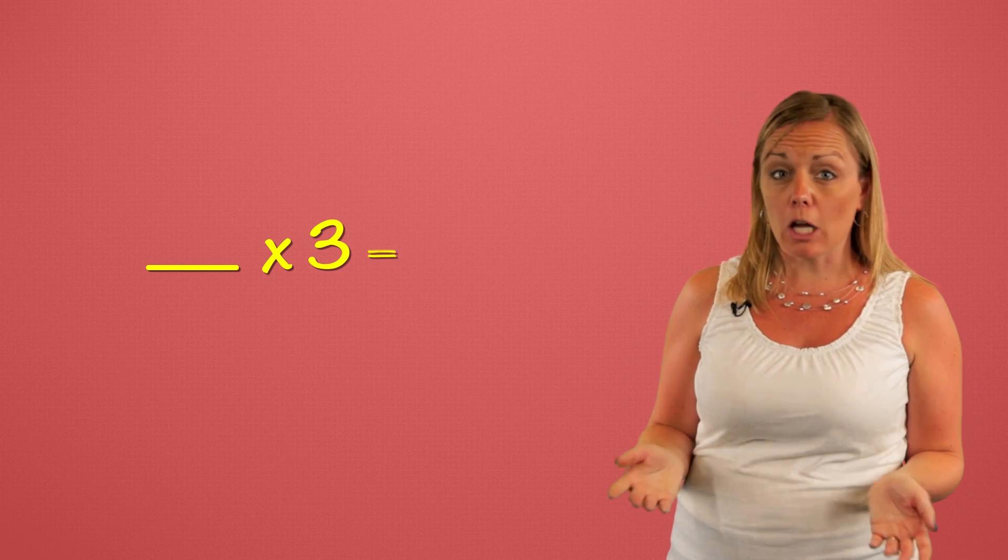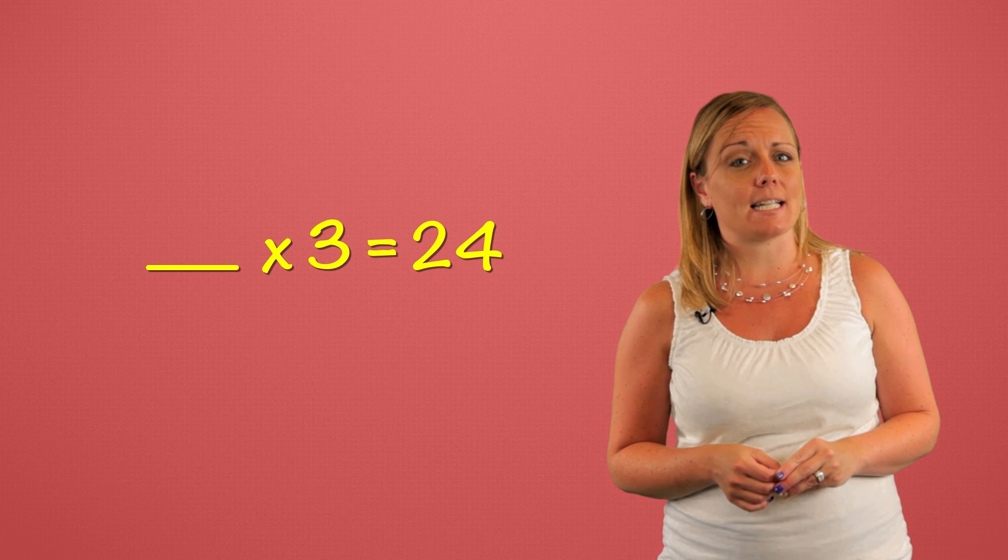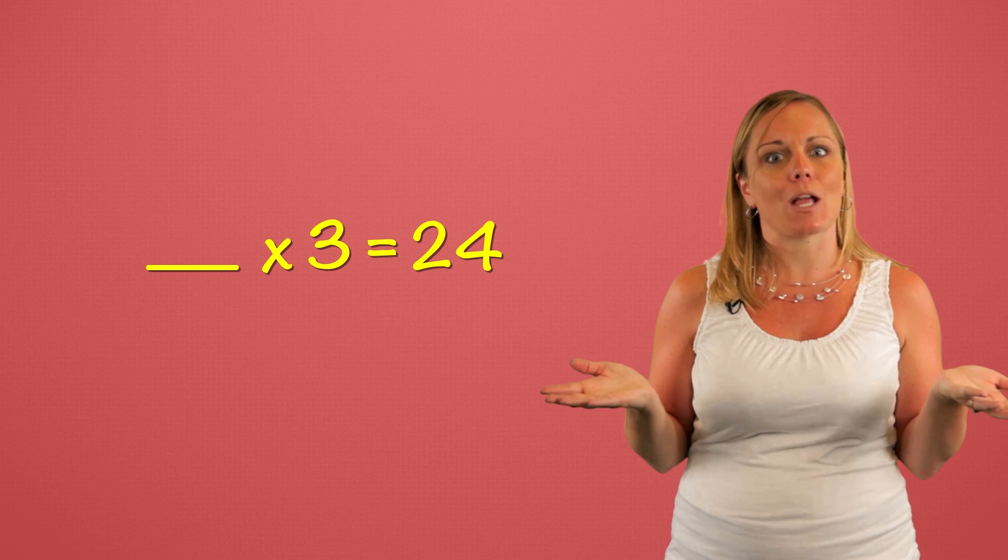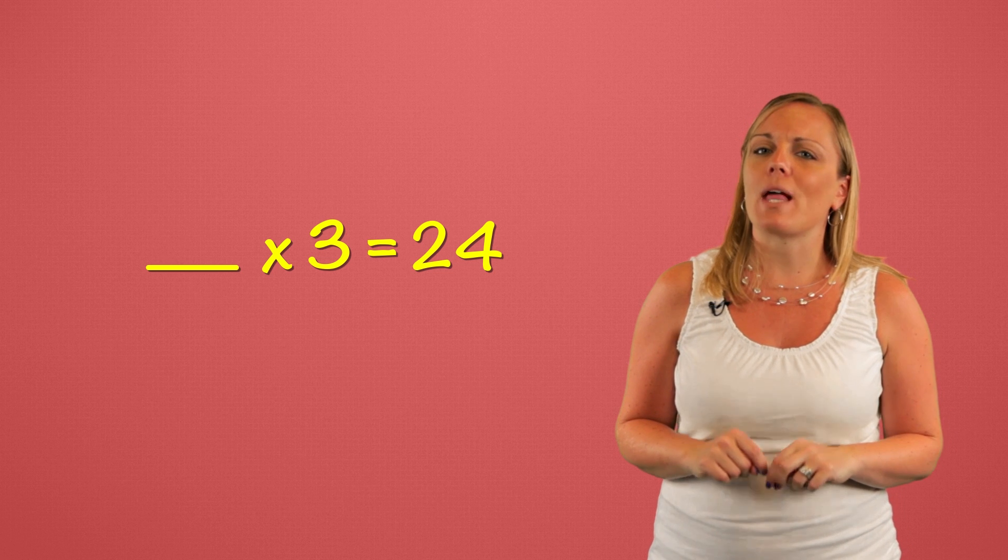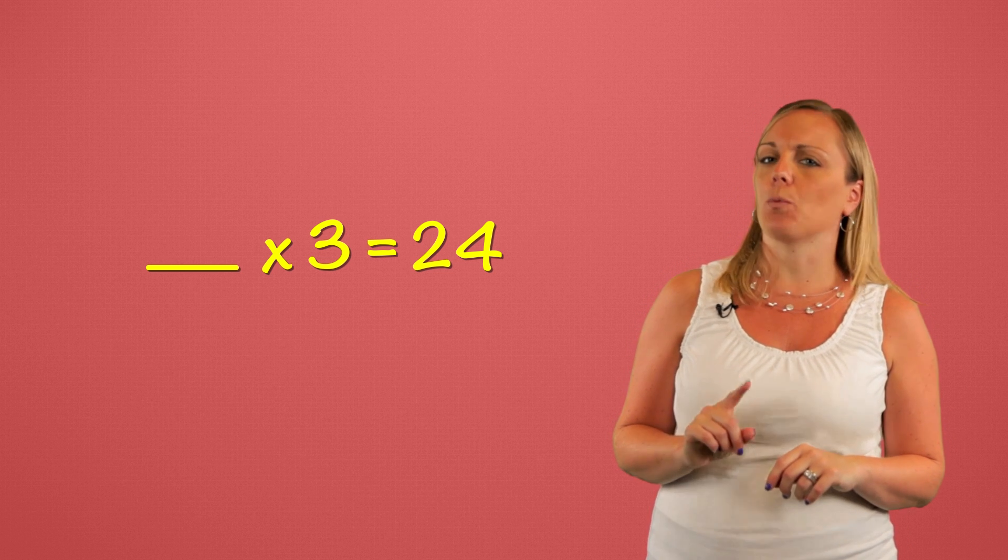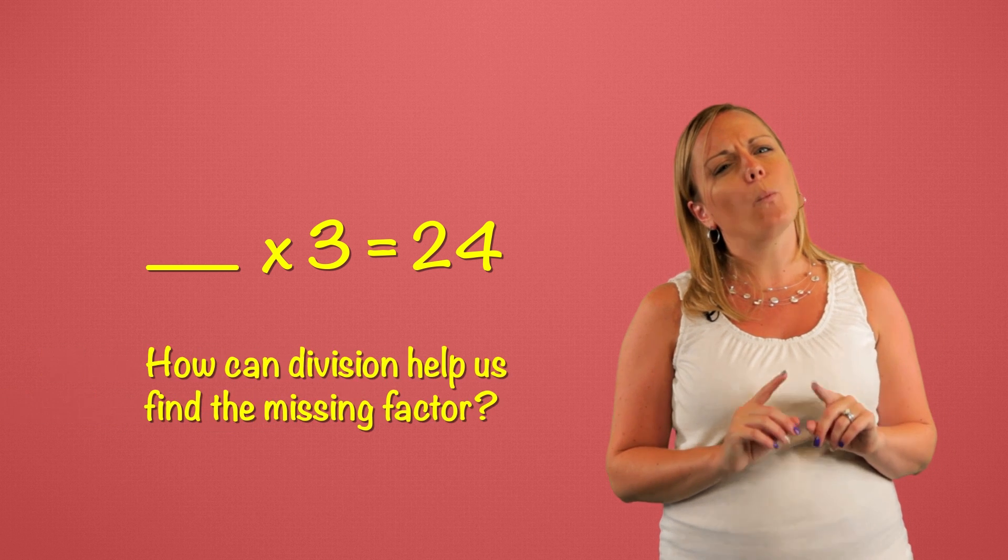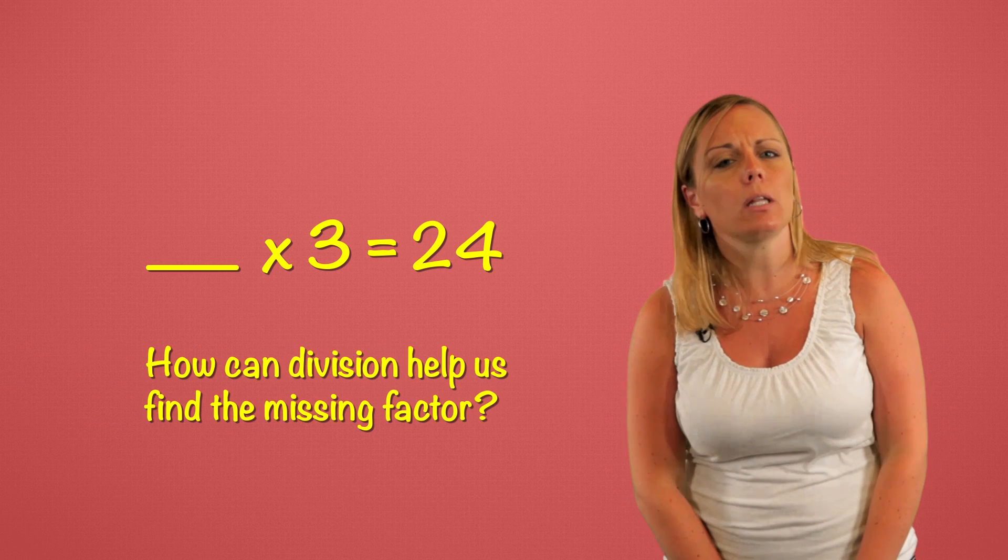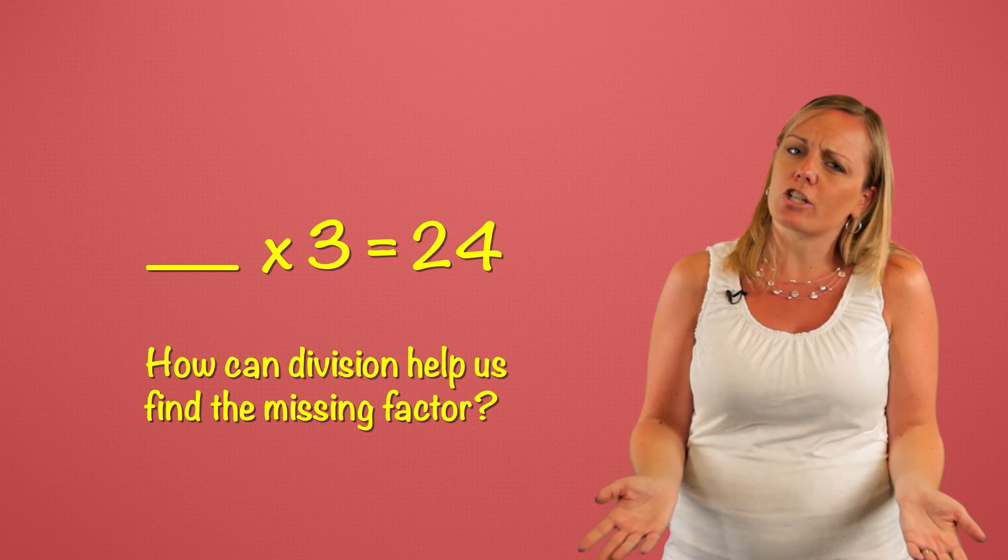Now let's take a look at this. Blank times three equals 24. We have an unfinished multiplication sentence. We're missing one of the factors. But we know that division helps us find one of the factors. So how can we rewrite this incomplete multiplication sentence to help us find the missing factor?